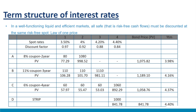A very important concept is the law of one price. In well-functioning, liquid, and efficient markets, all safe (risk-free) cash flows must be discounted at the same risk-free spot rate. Consider 4 risk-free government bonds with annual coupon payments. The law of one price says each risk-free dollar should carry the same value if received on the same date. For example, $1 received in year 4 has the same value whether from bond A, B, C, or D. Thus we use the same spot rate discount factor for each year across all bonds, after which YTM can also be computed.